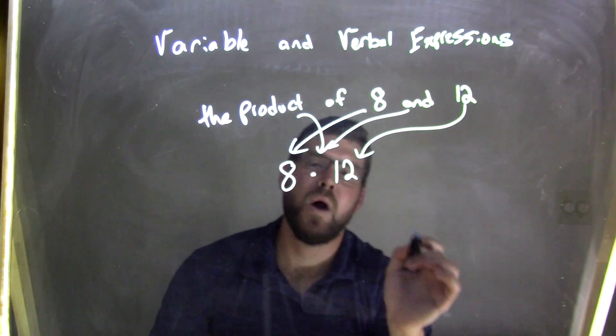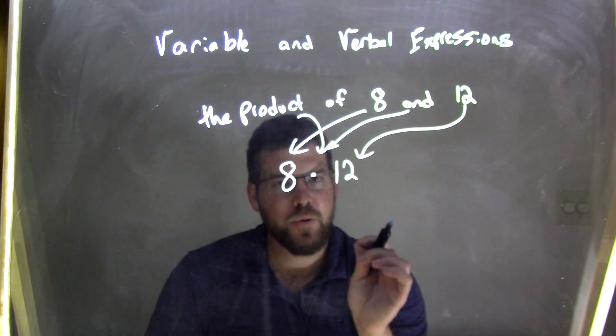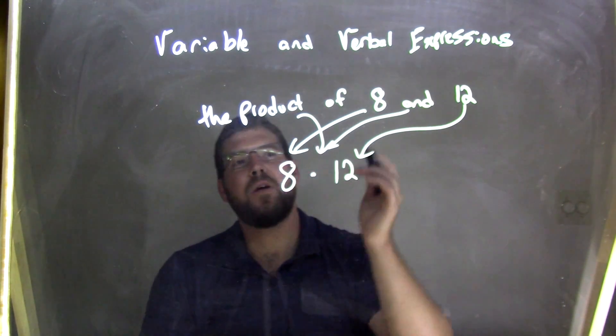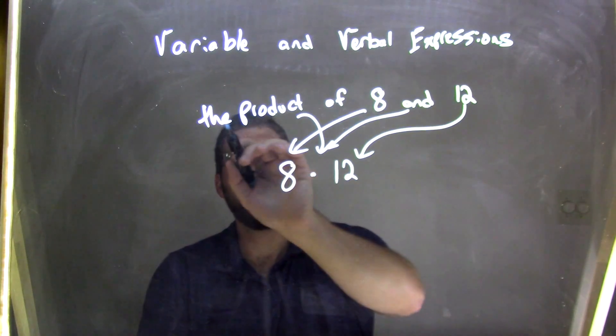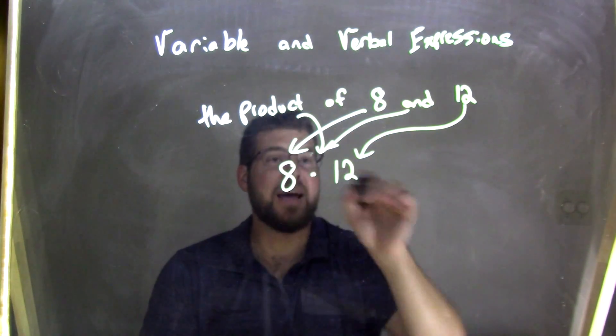So the product of 8 and 12 is the variable expression of the verbal expression written up here. So 8 times 12, the product of 8 and 12.